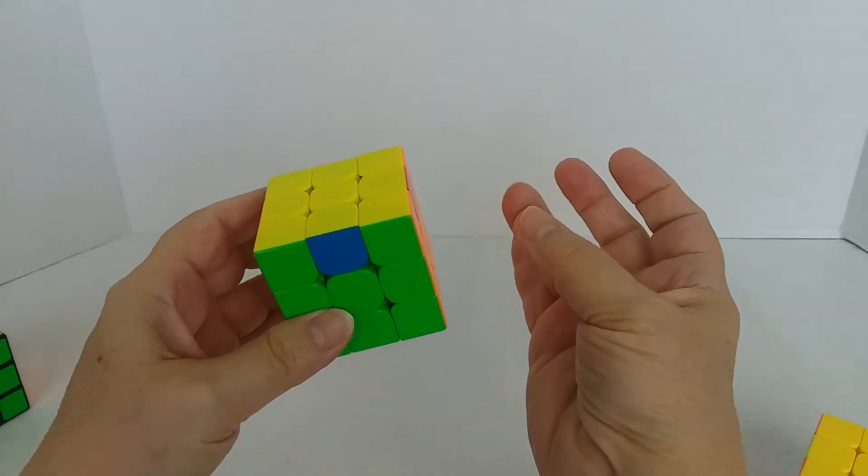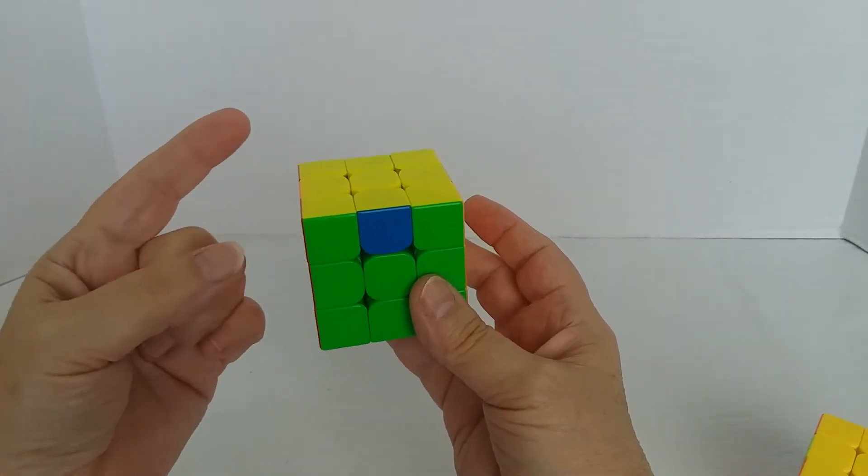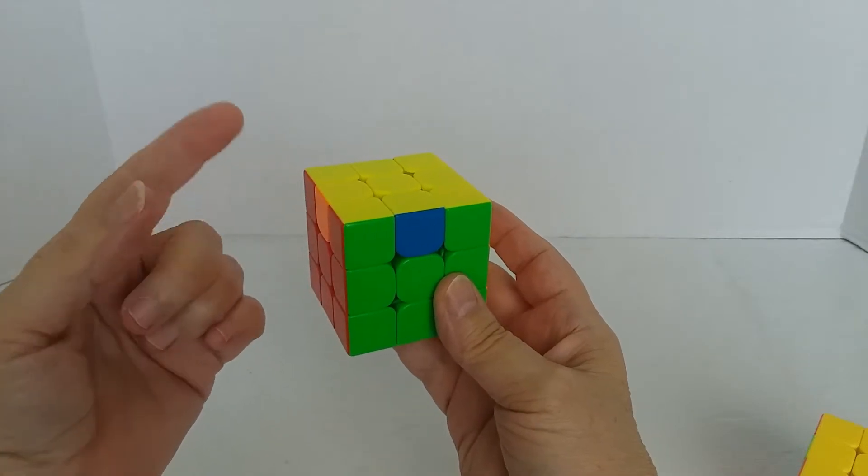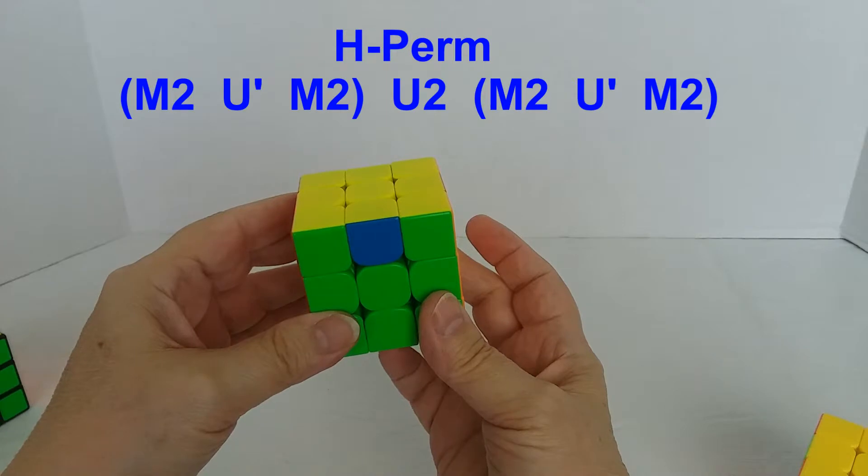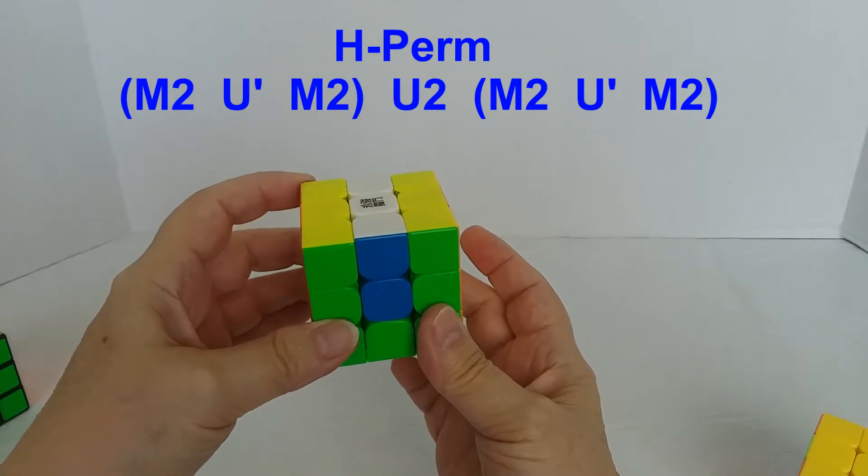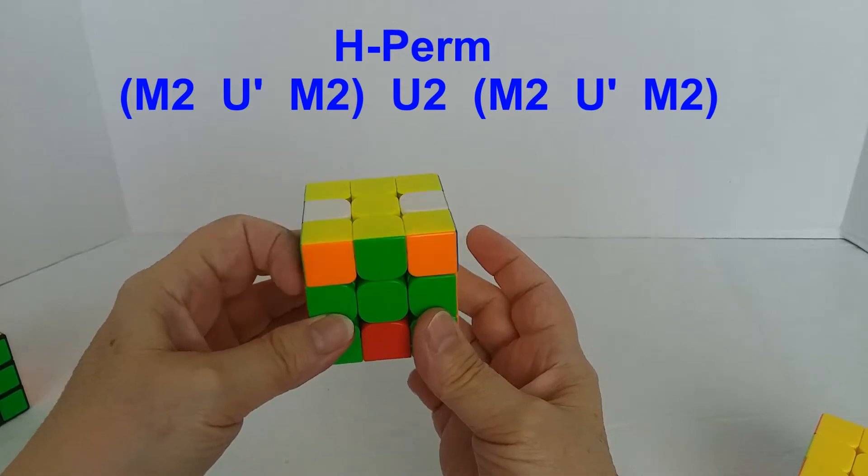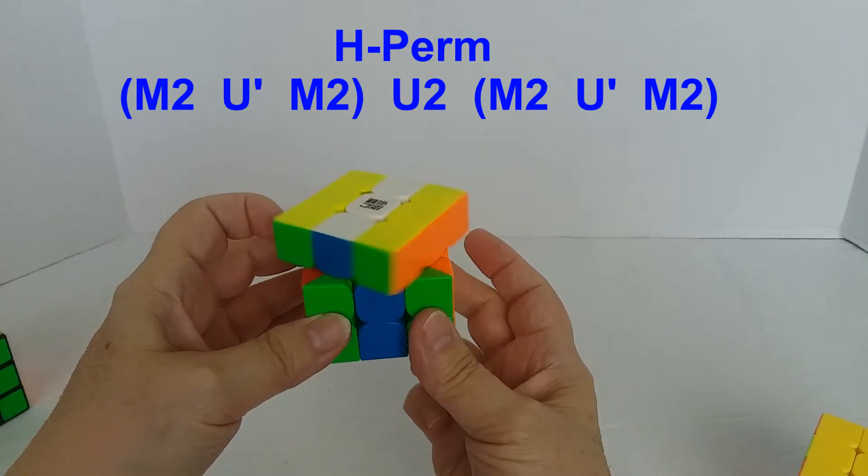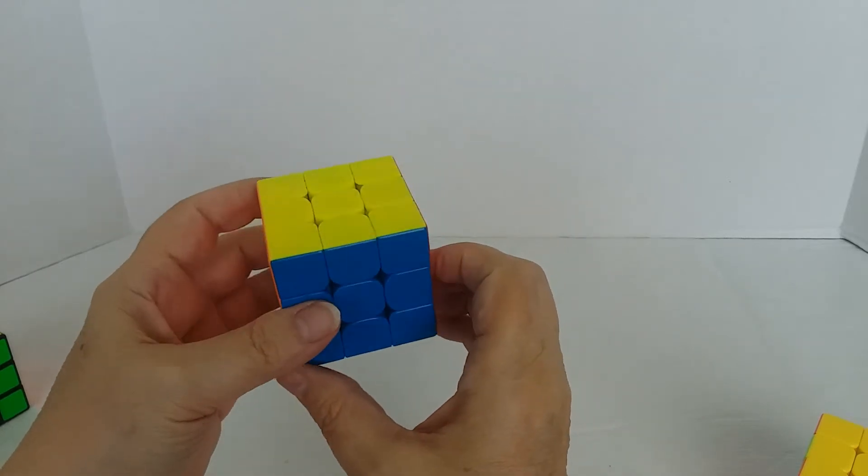I use my middle ring finger on my right hand to do M moves. And I use my index finger on the left hand to do U primes. And these are the moves I make: M2 U prime, M2 U2, M2 U prime, M2. And just like that it is solved.